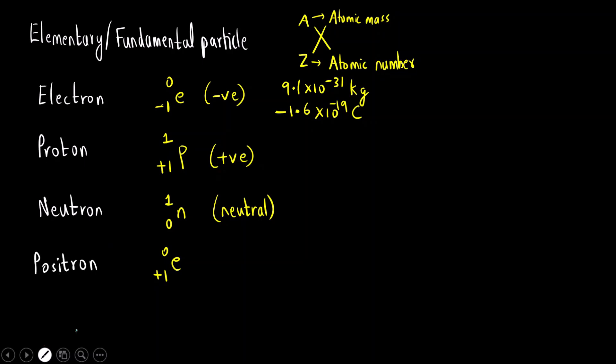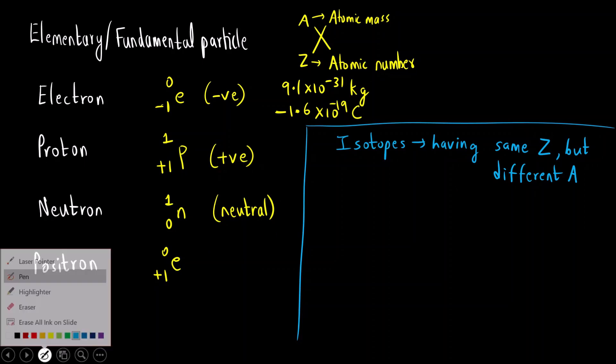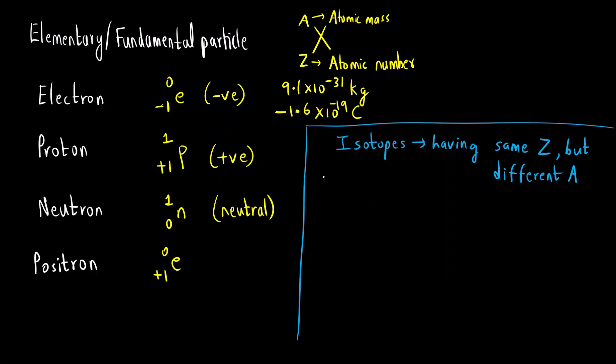So now let us talk about the isotopes of hydrogen. Sometimes we see isotopes of hydrogen in nuclear reactions. So what are isotopes? Elements having same atomic number, but different mass number. What are the three isotopes of hydrogen?